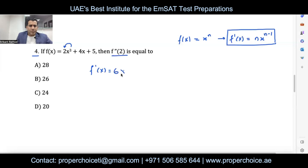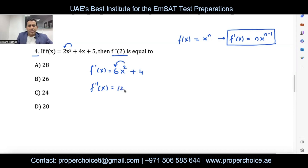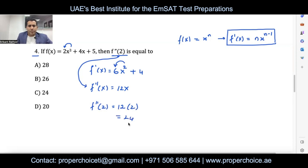So f'(x) = 6x² + 4. Now find the second derivative by applying the power rule again: 2 × 6 = 12, reduce power by 1 → 12x; derivative of the constant 4 is 0. So f''(x) = 12x. Substitute x = 2: f''(2) = 12 × 2 = 24. The answer is option C.